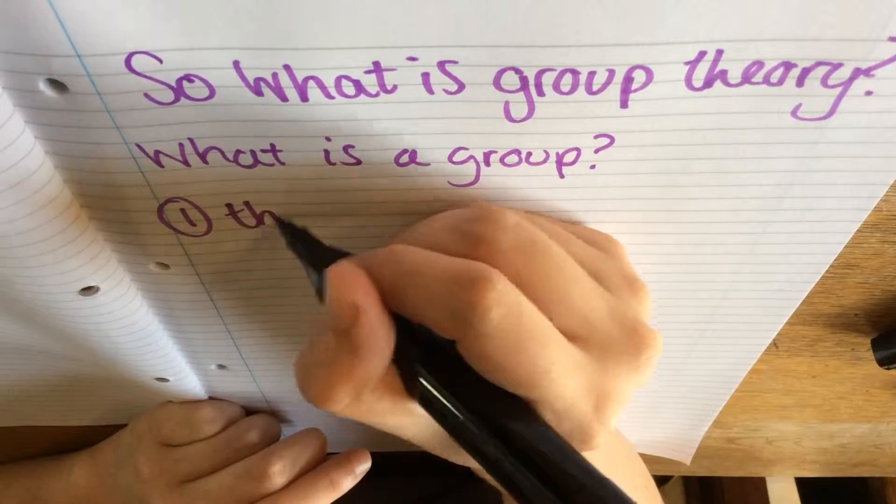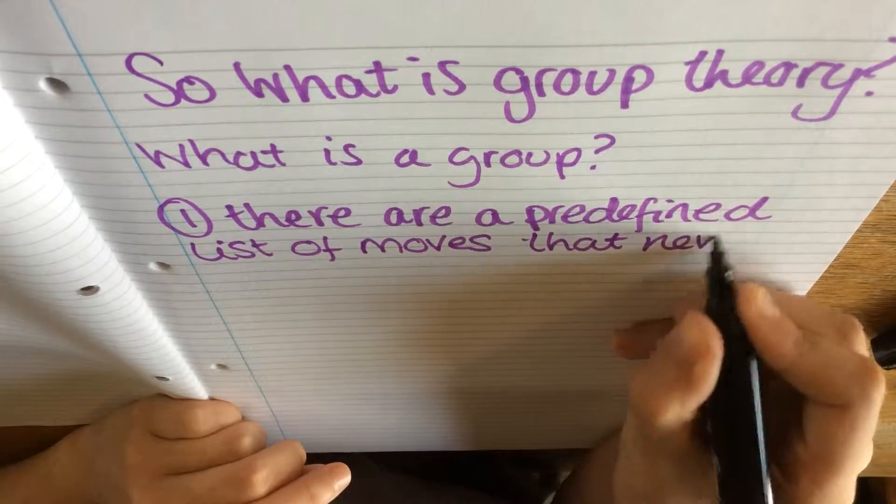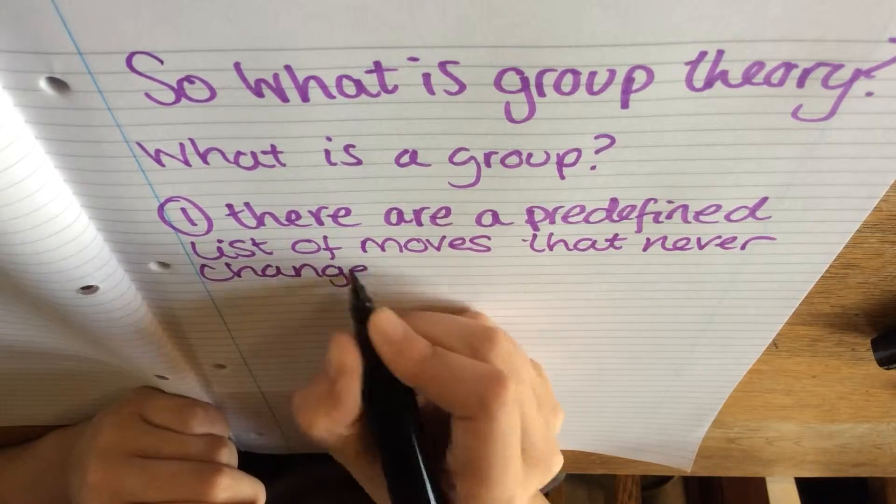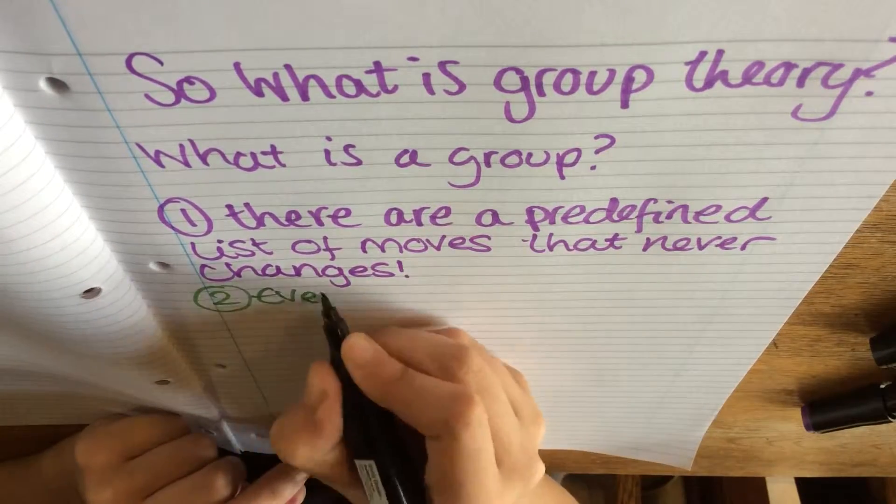These four rules are: there are a predefined list of moves that never changes. Secondly, every action is reversible.